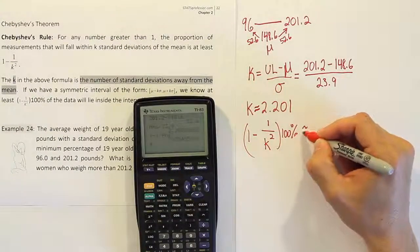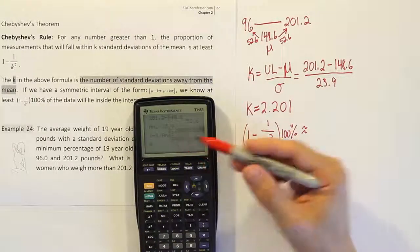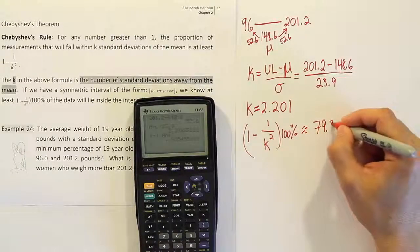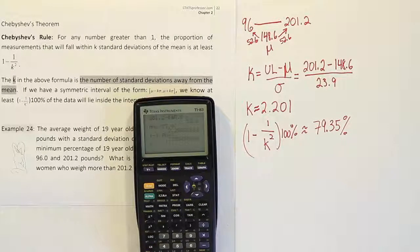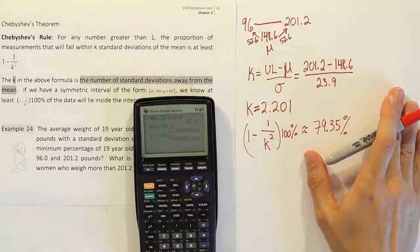So the answer is approximately, after multiplying by 100%, which just moves that decimal place over two places, 79.35%. So roughly 79% if you want to keep it to whole percentages.